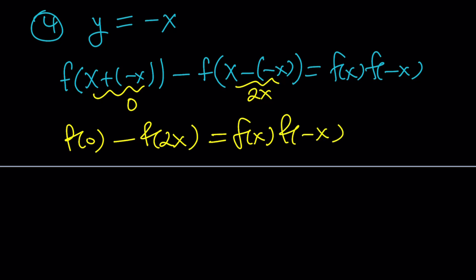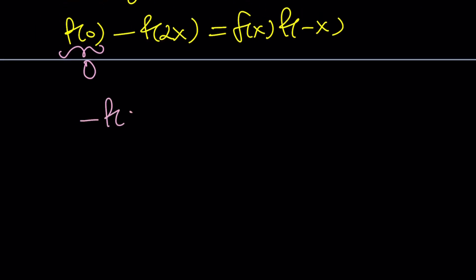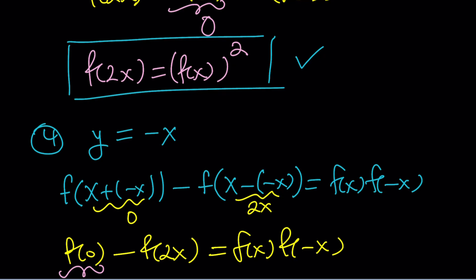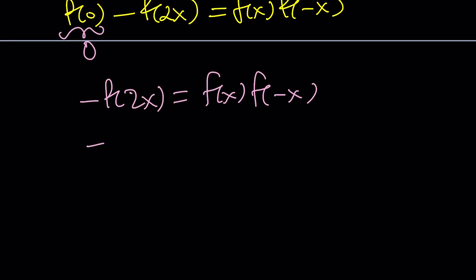This might look a little confusing because even though we do know f of 0 is 0, this kind of gives us something weird because we kind of have too many unknowns. What is f of 2x? What is f of x? What is f of negative x? But wait a minute. You can really come up with something nice from here. Because f of 2x, I can replace it with something. How? Look at step number 3. f of 2x is the same as f of x squared. Let's do that. We're going to replace f of 2x with f of x squared.